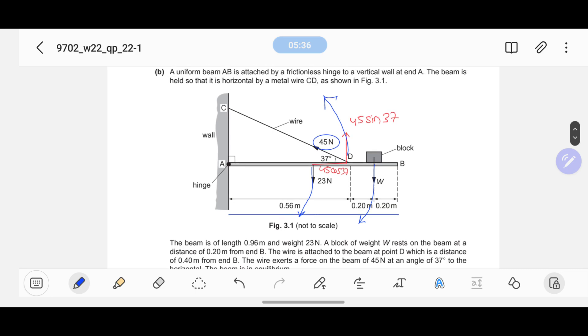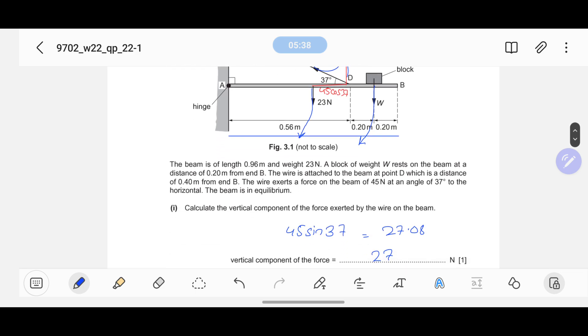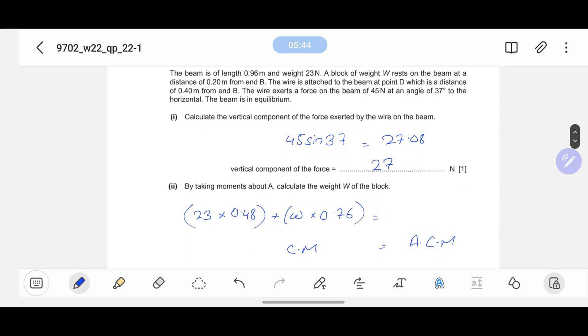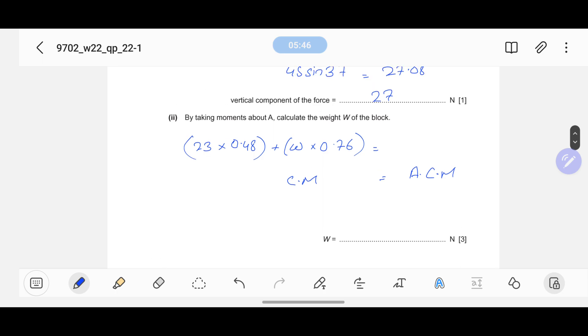Now this force that was coming out, 27, is 0.56 meters away from the hinge A, and it will be rotated anti-clockwise. So I will write 27 times 0.56. If I calculate, I can easily find the value of W, and the value of W is coming somewhere around 5.4 Newton.